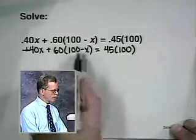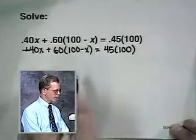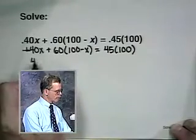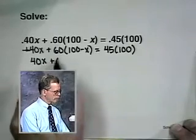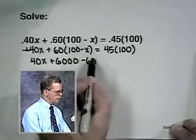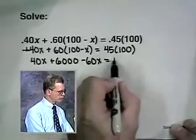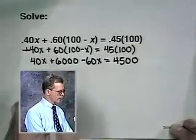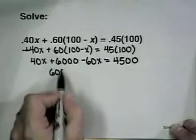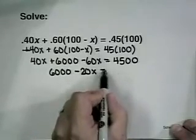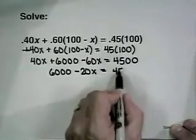Multiplying by 100 will not change the (100 - x) inside. Now we'll use the distributive property to remove the parentheses. We can combine like terms to get 6000 - 20x = 4500.